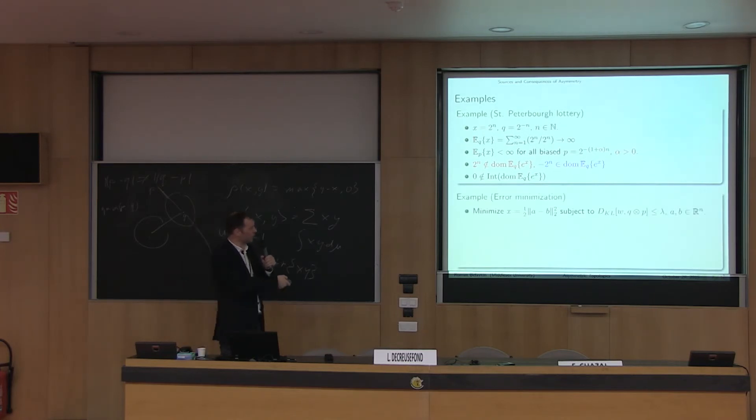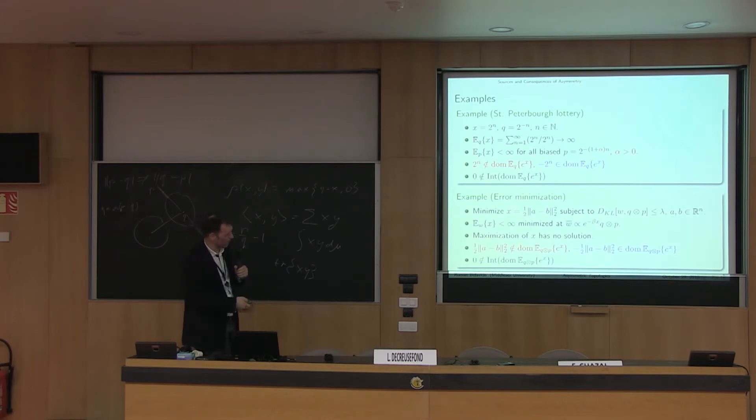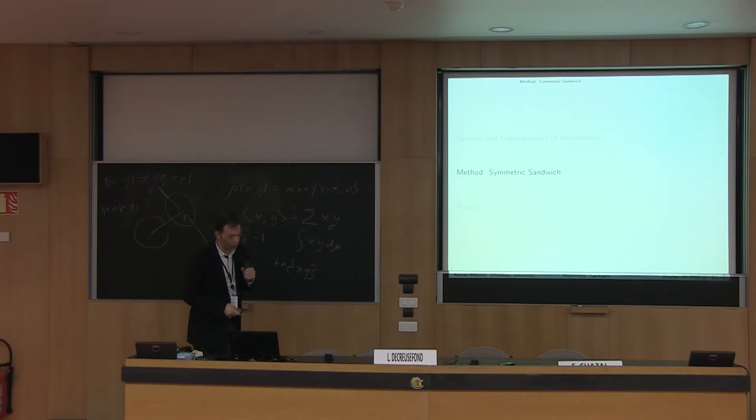Another example is related to error minimization. Let's say we want to minimize a square Euclidean distance between two random variables A and B, but we want to minimize them over all distributions which satisfy this constraint. This is Shannon information written in joint distribution. The solutions of this are exponential family distributions like of this form. They are finite, but it's important to understand the maximization of X has no solution. Minimization of minus X corresponds to maximization of X. If you put positive Euclidean distance here, of course it doesn't. There is no solution. In Euclidean space, there is no distribution that gives you maximum Euclidean distance because such doesn't exist.